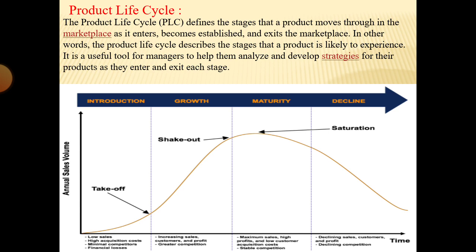The product life cycle is associated with variations in the marketing situation, level of competition, product demands, consumer understanding, etc. Thus, marketing managers have to change the marketing strategy and the marketing mix accordingly. This strategy is very useful for managers to help them analyze and develop strategies for their products as they enter and exit each stage. That is the end of our lecture; next time we will study another topic.